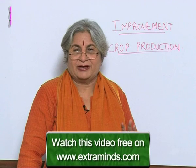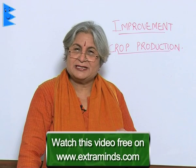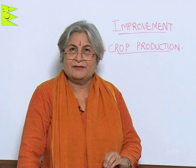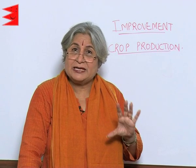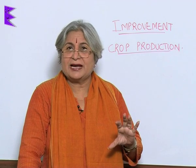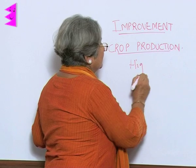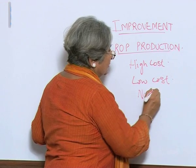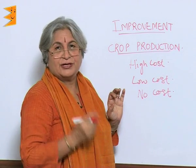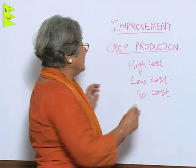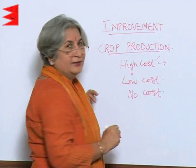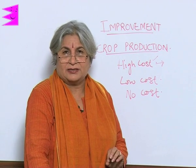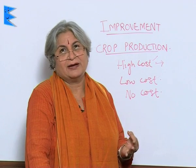Today agriculture is an industry, which means we need modern equipment like tractors and harvesters. We need good variety of seeds, manure, fertilizers, weedicides, and pesticides. All this means high output. There can be high-cost, low-cost, or even no-cost agriculture depending on resources. More money generally means higher yield, but if we use resources efficiently, we can still get the maximum output.